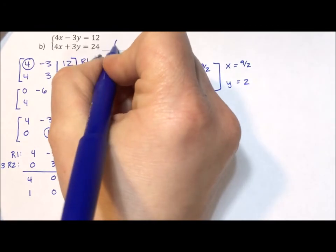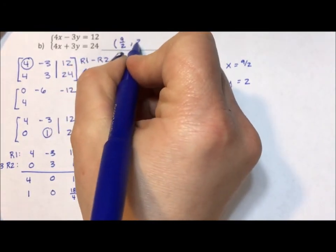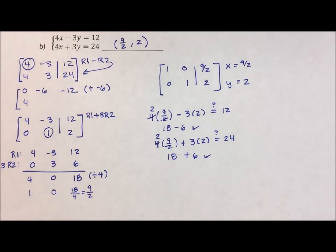So my answer becomes an ordered pair, 9 halves comma 2. I hope you enjoyed this video. Please subscribe to my YouTube channel, like my Facebook page, and I'll see you on the next video. Thanks.